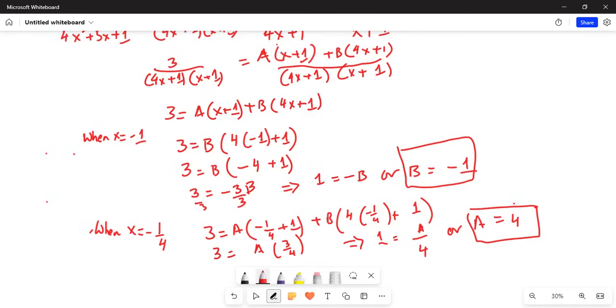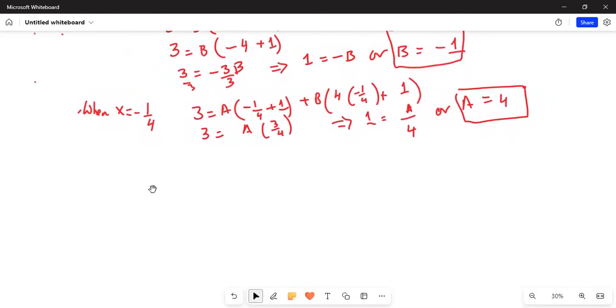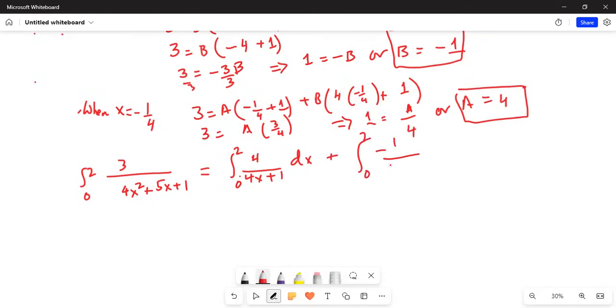The original problem can be broken up into parts now. We have integration from 0 to 2, 3 over 4x squared plus 5x plus 1, is equal to integration from 0 to 2, for A I write 4 over 4x plus 1 dx, plus integration from 0 to 2, for B I write minus 1 over x plus 1 dx.